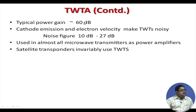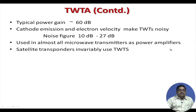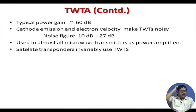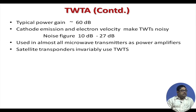Typical power gain of a TWT amplifier is 60 dB. However, cathode emission and electron velocity make the TWT noisy — noise figure is typically 10 dB to 27 dB, quite noisy compared to the 0.3–0.4 dB required for LNA applications. TWT is used in almost all microwave transmitters as power amplifiers. Cellular base stations use TWTA before pumping power out. In all satellite transponders or ground stations, the final power amplifier is invariably the traveling wave tube.